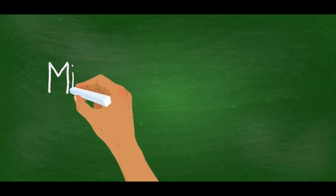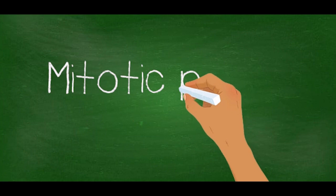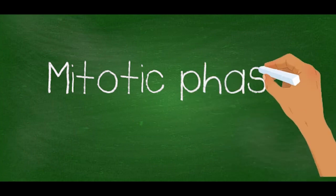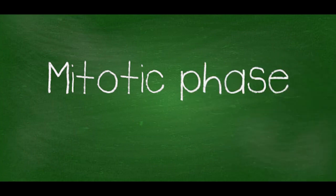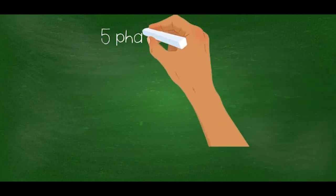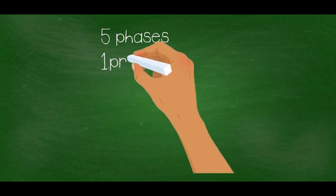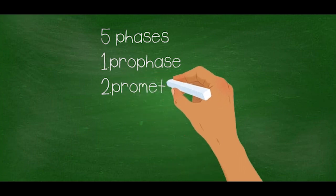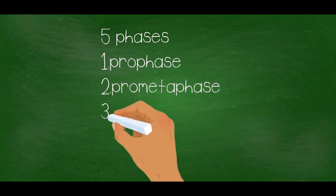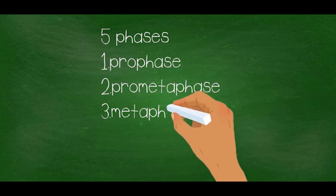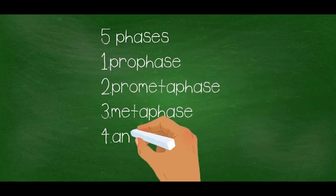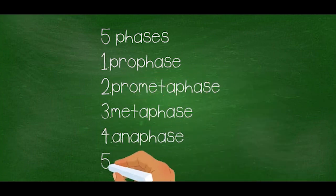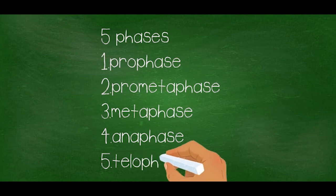The mitotic phase is the most important phase in this process. It has five phases: prophase, prometaphase, metaphase, anaphase and telophase.